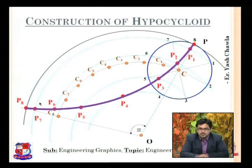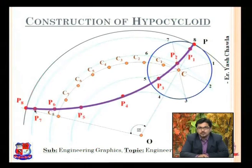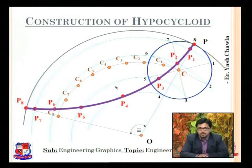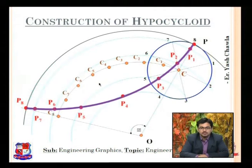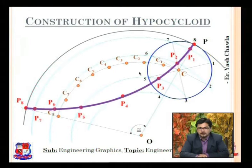The curve passing through all these points is the required hypocycloid. This is just one part; you can continue to draw the rest as well. The arc length and angle can also be mentioned in the question, and the diameters will be given. Depending on the data provided in the question, construct the curve using the method discussed.